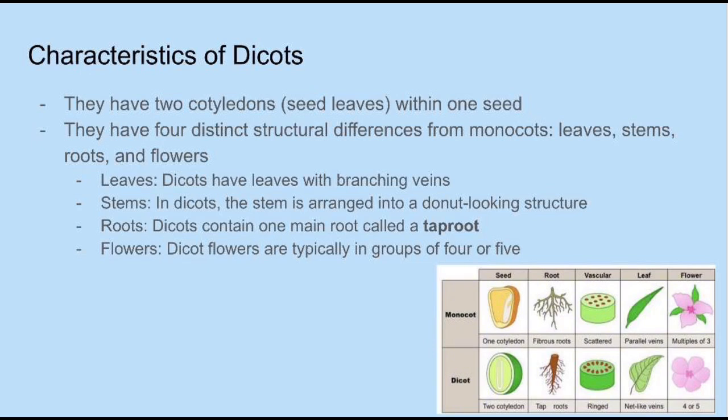For the leaves, dicots have leaves with branching veins, as seen in this photo. For the stems, they are arranged into a donut-looking structure. As for the roots, dicots contain one main root called a taproot. And for flowers, dicot flowers are typically in groups of four or five.